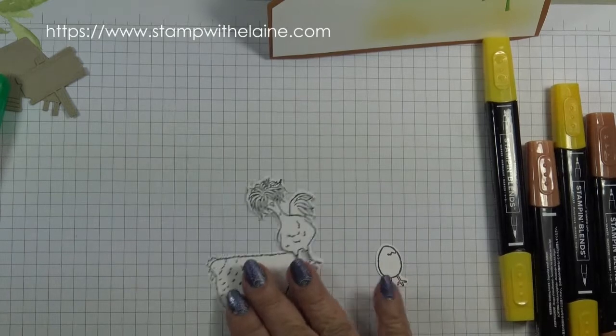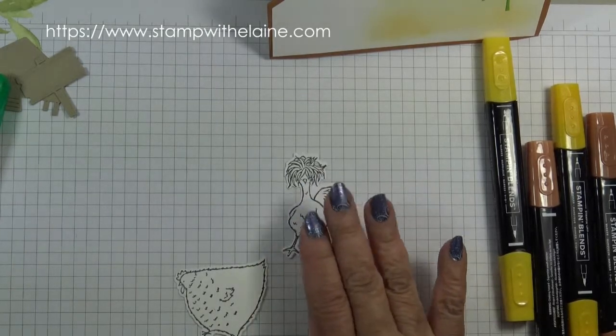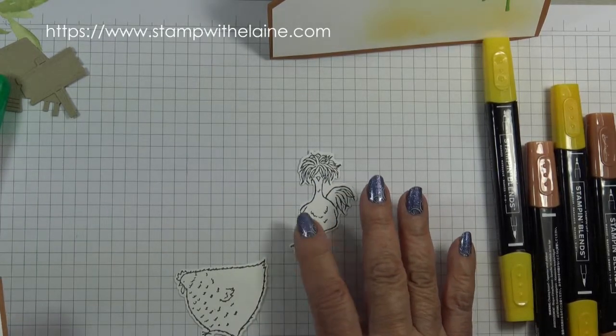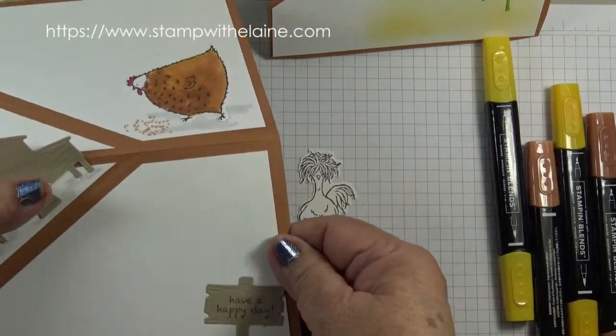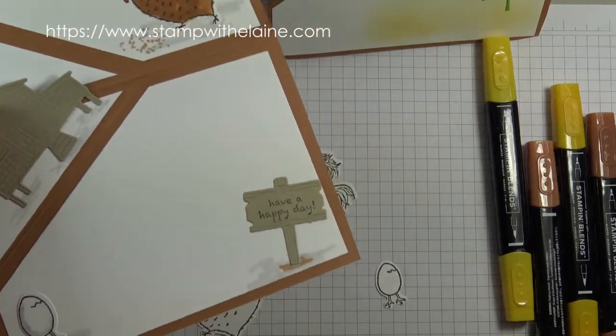Now I've got a bit of colouring to do. I'll do him in Mango Melody and Pumpkin Pie. This one in Cinnamon Cider and I need Smoky Slate.